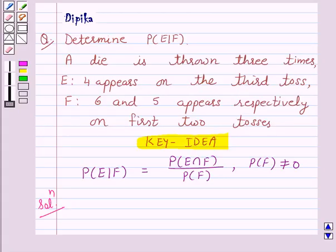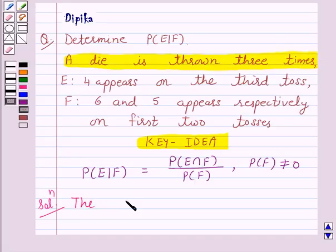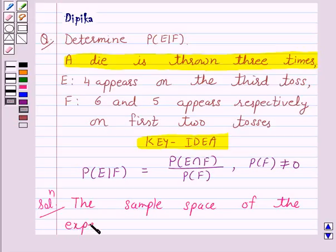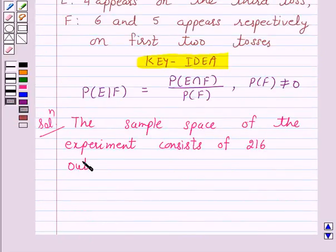Now, according to the given question, a die is thrown three times. So the sample space of the given experiment consists of 216 outcomes in the form of triplets.